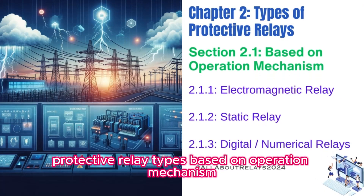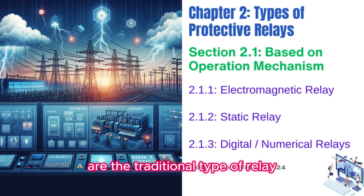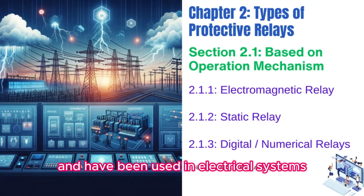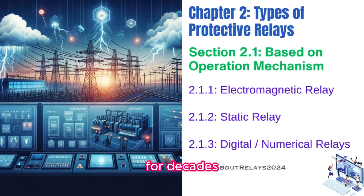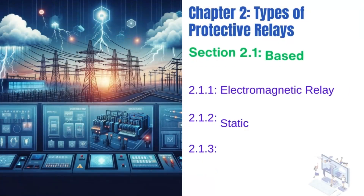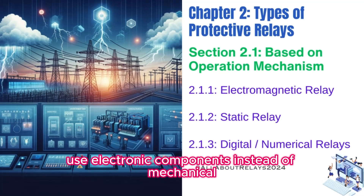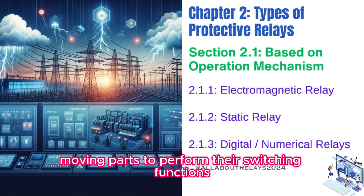Protective relay types based on operation mechanism. Electromagnetic relays are the traditional type of relay and have been used in electrical systems for decades. They operate based on electromagnetic principles. Static relays, also known as solid-state relays, use electronic components instead of mechanical moving parts to perform their switching functions.